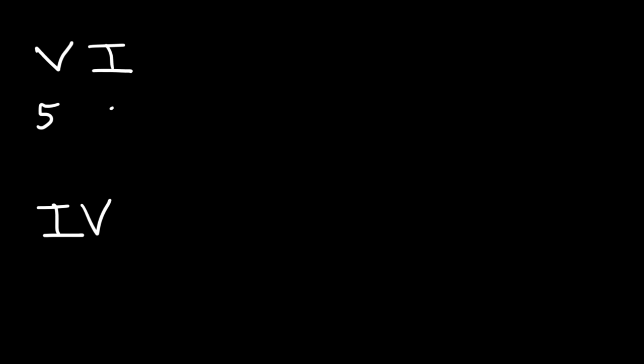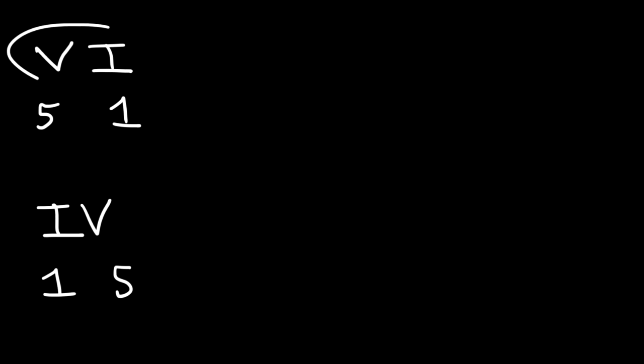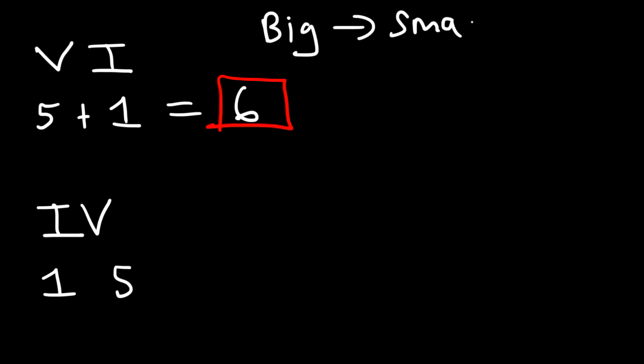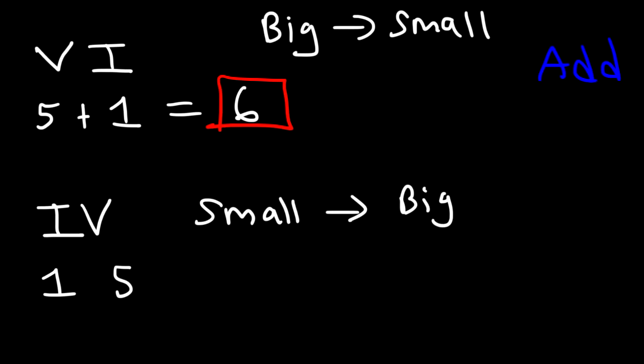What is the difference between VI and IV? They both contain a V and an I, but the order is different. When going from a big number to a small number, you add. When going from a small number to a big number, you subtract — taking the big minus the small. So VI is 5 plus 1, which equals 6. For IV, it's 5 minus 1, which equals 4.